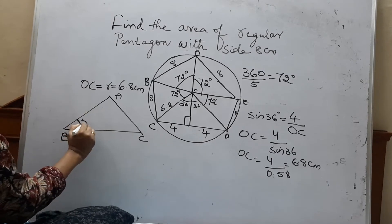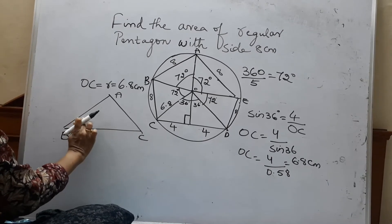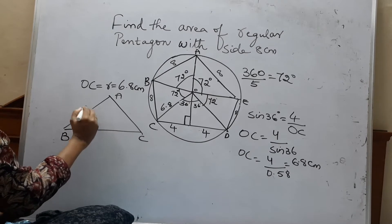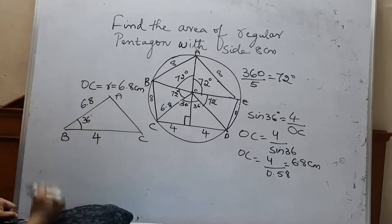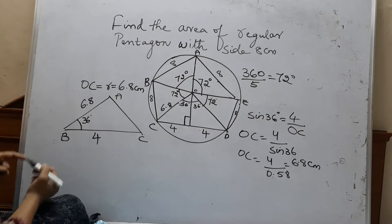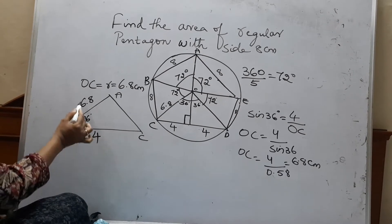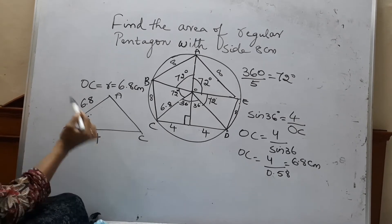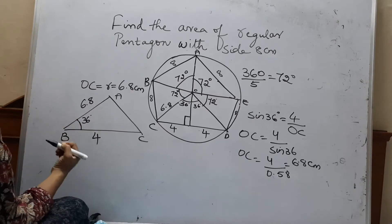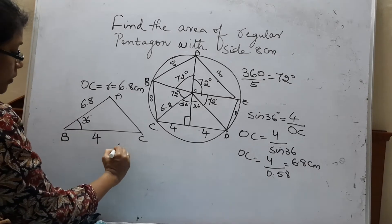This is C and this is 36. And this is 6.8 and this is 4. If the included angle is given, why is it called included? Because this is in between the two given sides, 6.8 and 4. So when the included angle is given, what is the area of a triangle?